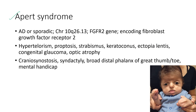Next is Apert syndrome. It can be autosomal dominant or sporadic. As shown in the clinical picture, there is hypertelorism and proptosis. Other ocular features include strabismus, keratoconus, ectopia lentis, congenital glaucoma, and optic atrophy. The systemic features include craniosynostosis, syndactyly, broad distal phalanx of the great thumb or toe, and mental handicap.